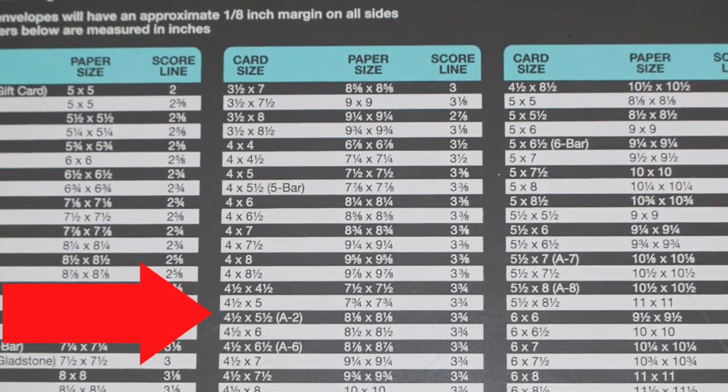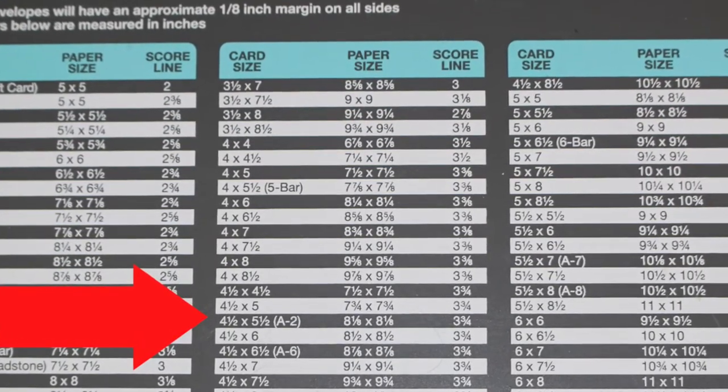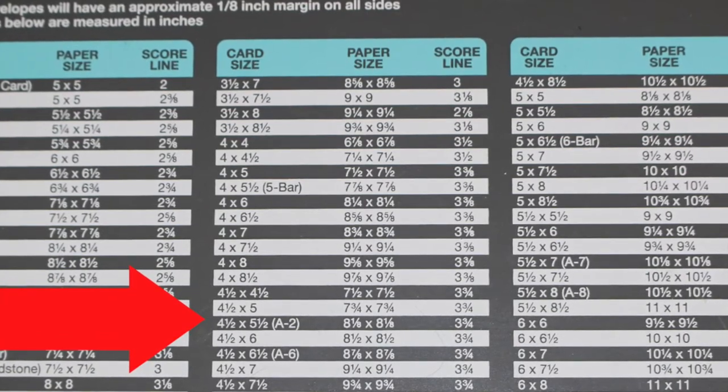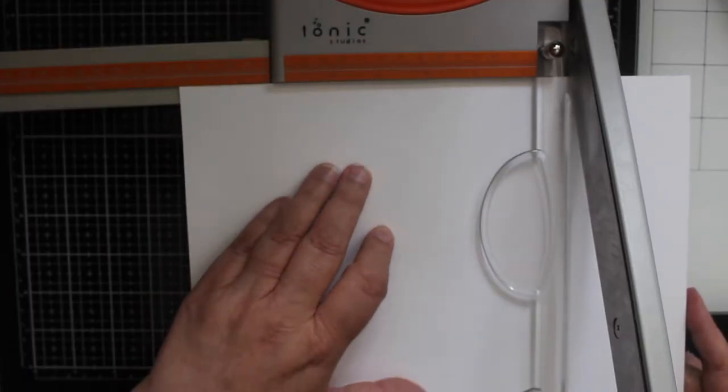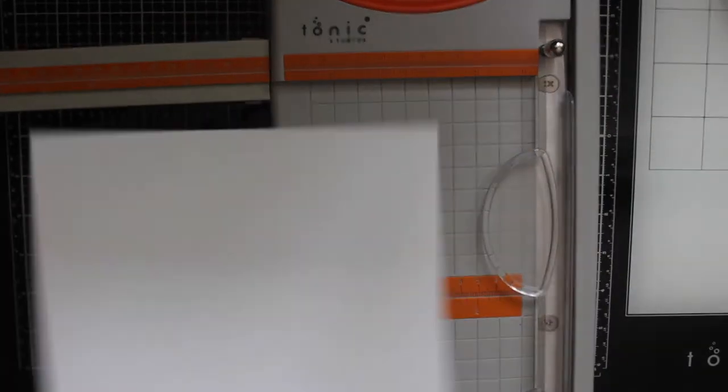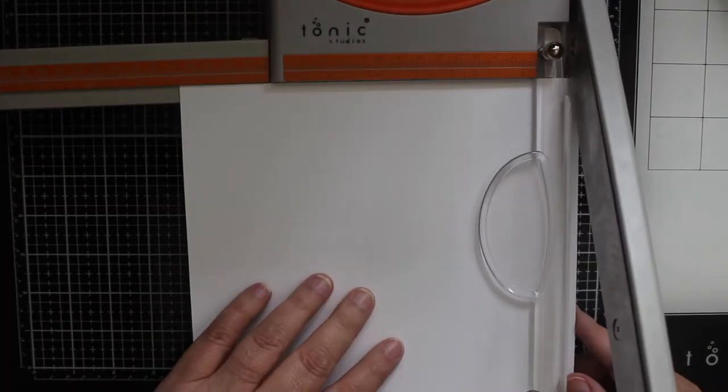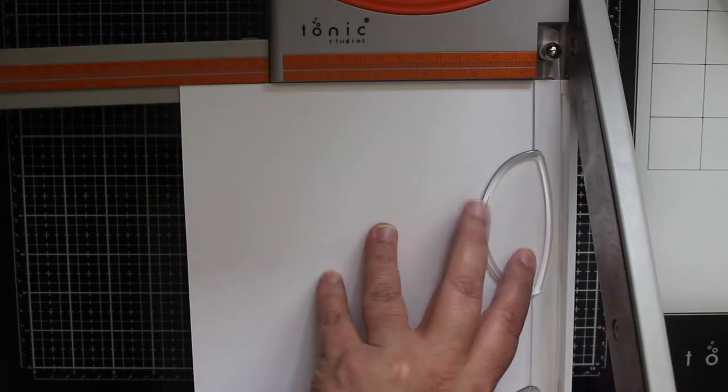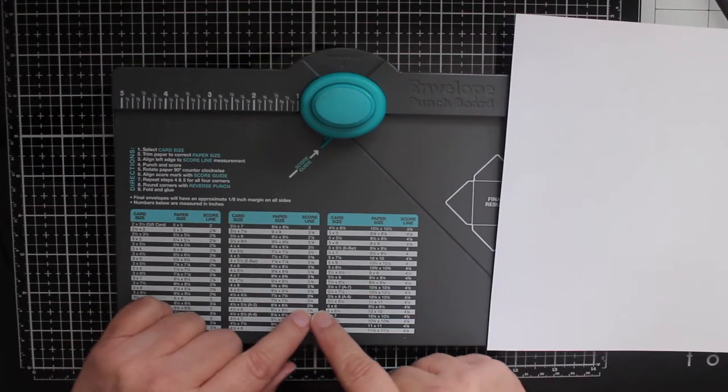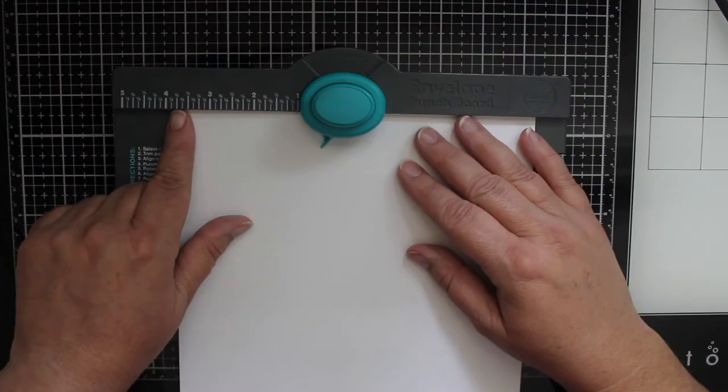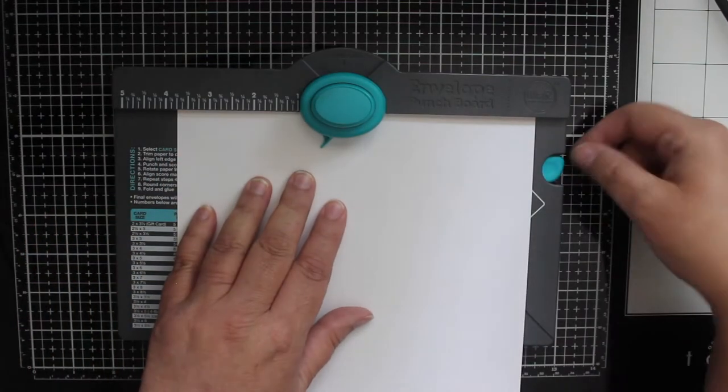The first envelope I'm making is for a 5 1⁄4 by 4 1⁄2 inch card. So you can see in the close-up I need to cut a sheet of paper to 8 1⁄8 by 8 1⁄8 inches. I'm using my tonic guillotine trimmer to cut my paper to size. Checking again for my place on the ruler, I'm lining up the top left corner of my paper with the 3 3⁄4 inch mark like the chart says.